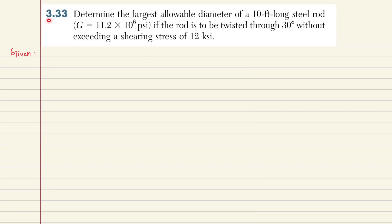Welcome back to Problem 3.33. This problem is taken from Mechanics of Materials by Beer and Johnston, sixth edition. The statement is: Determine the largest allowable diameter of a 10-foot-long steel rod with modulus of rigidity G = 11.2 × 10^6 psi if the rod is to be twisted through 30 degrees without exceeding a shear stress of 12 ksi.